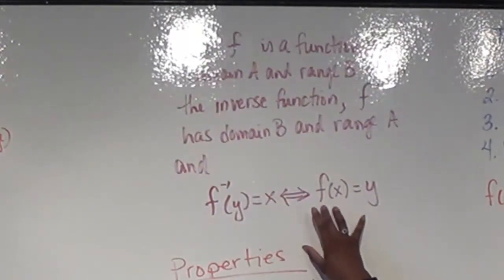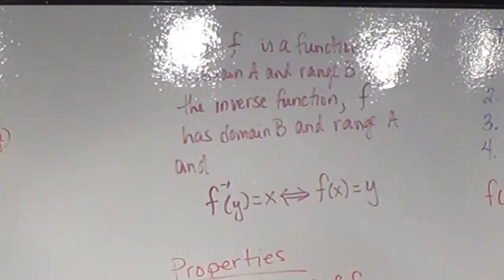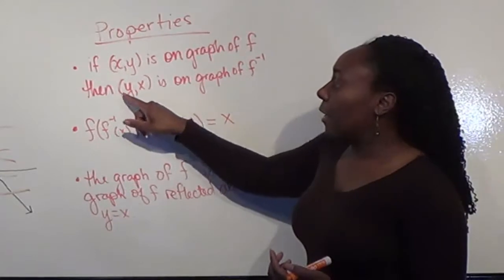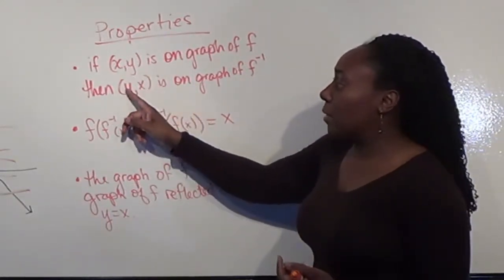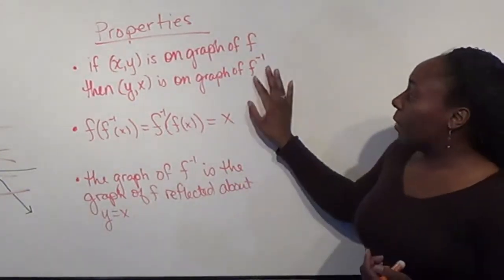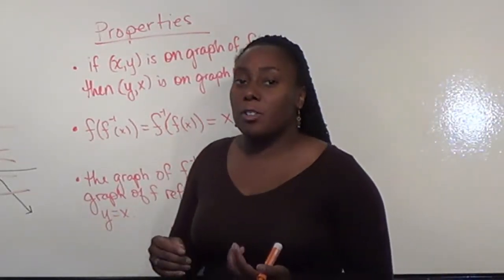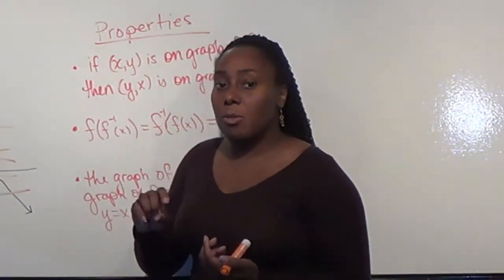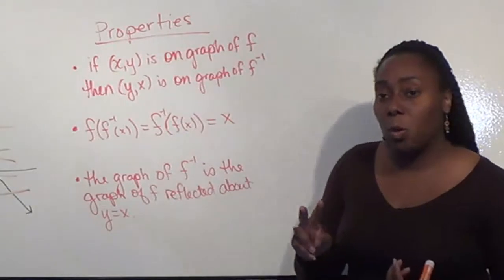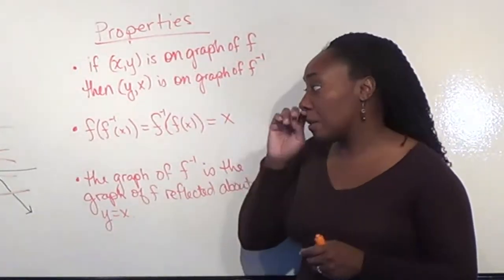Notice here we're talking in terms of functions. But like I said, every function has an inverse. So if I have a point on a graph, if x, y is the point, then y, x is on the inverse. Here I put f inverse in terms of the function notation, but if it's not a function, that just means I can still do this, meaning switch the x's and y's to get the inverse. It's just it may not be a function in that sense.